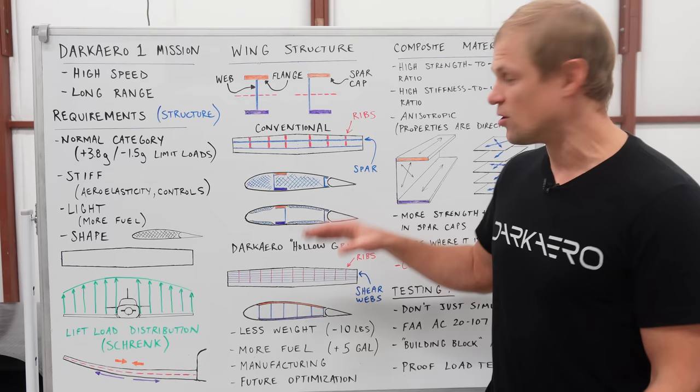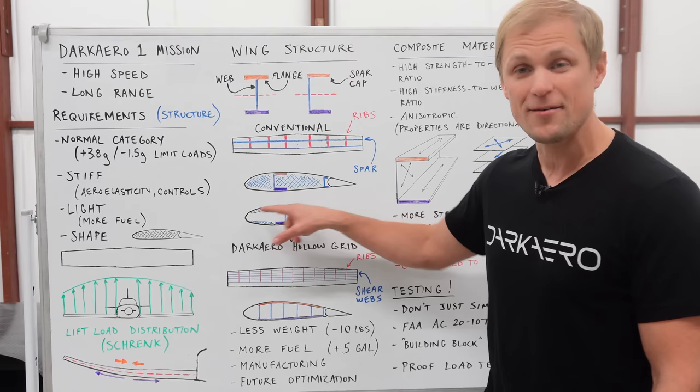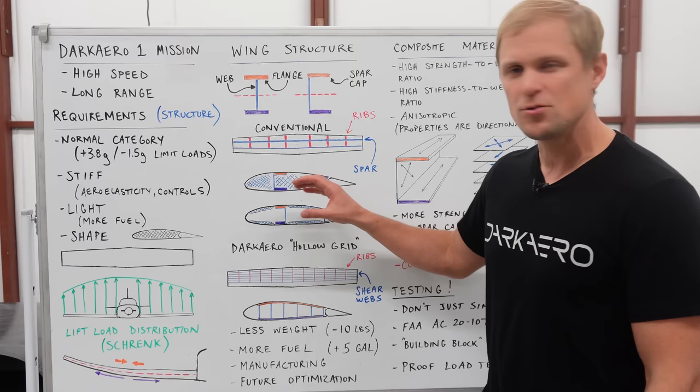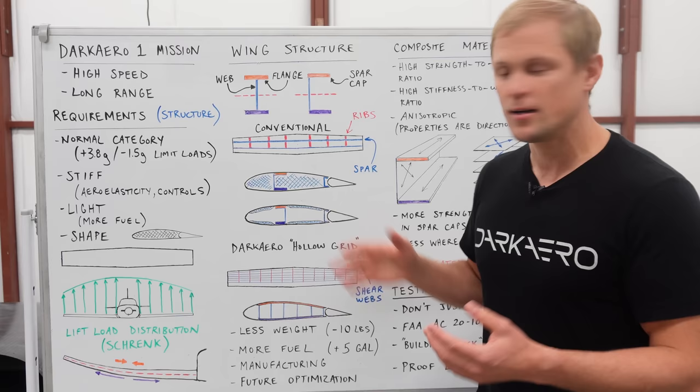And we figured out that the hollow grid wing for our aircraft presented a couple advantages over the conventional design. We saw that when we integrated the spar caps into the wing skins, it was able to do somewhat of the job of the foam core that we have in the wing skin here and stabilize the wing skins against buckling. It doesn't do the full job though, so we have to add in a little bit of interior structure to support the skins, and that's what this hollow grid interior structure is. This is specific to our design, but we figured out that when we compared the conventional wing with our hollow grid wing, it was about 10 pounds lighter.